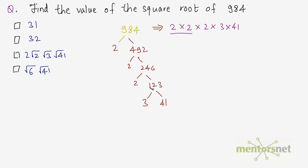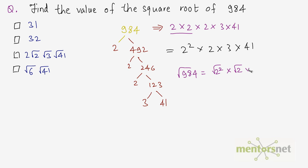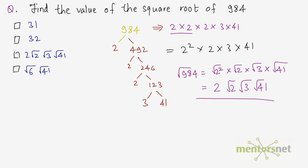Now this can be grouped as 2 squared, with 2, 3, and 41 remaining as they are. So 984 equals 2 squared times 2 times 3 times 41. Taking the square root of both sides, we have the square root of 984 equals the square root of 2 squared, times the square root of 2, times the square root of 3, times the square root of 41. This simplifies to 2 times the square root of 2, times the square root of 3, times the square root of 41. Of course you can calculate the square roots of non-perfect square numbers — they come out as decimals — but we have our answer in simplified radical form.